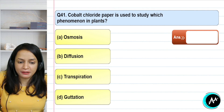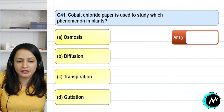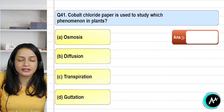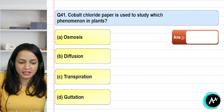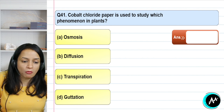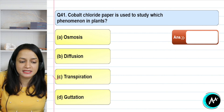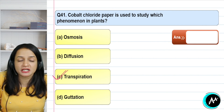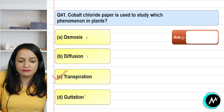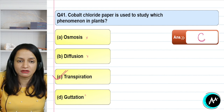Question 41: the cobalt chloride paper is used to study which phenomenon in plants — osmosis, diffusion, transpiration, or guttation? The cobalt chloride paper is specially designed to study the rate of transpiration — not osmosis, not diffusion, not guttation. The correct answer for question 41 is option C — transpiration.